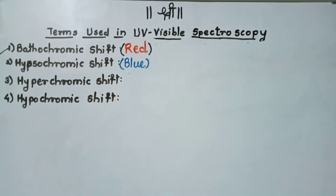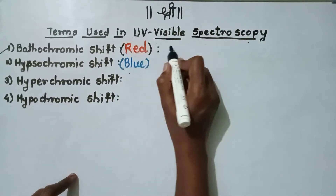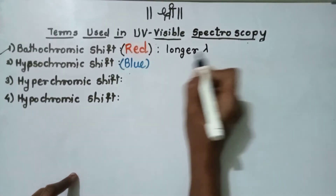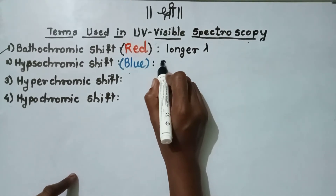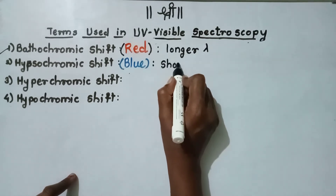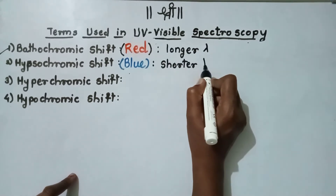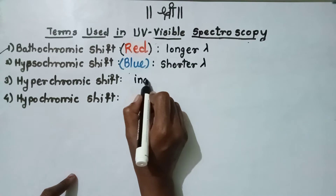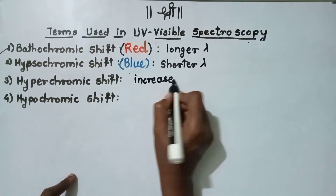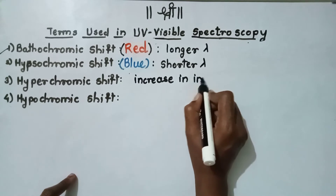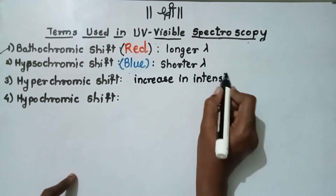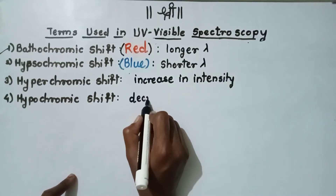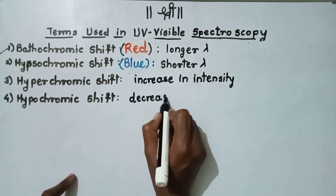The bathochromic shift causes the shift of spectra towards the longer wavelength. The hypochromic shift causes the shift of spectra towards the shorter wavelength. Hyperchromic shift causes the increase in intensity of the spectra, whereas hypochromic shift causes the decrease in intensity of the spectra.